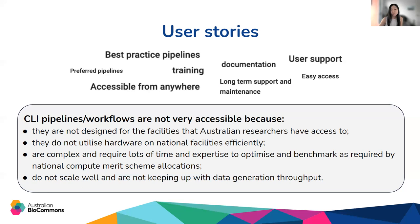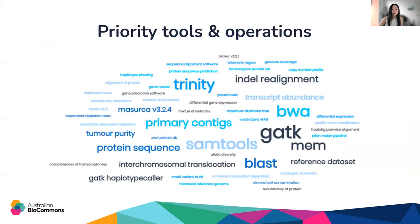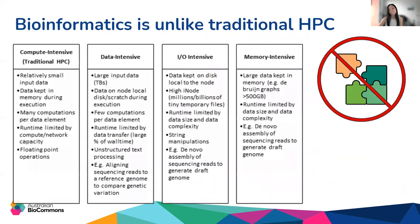We also found that many best practice tools don't natively scale well. The tools, if run out of the box, didn't utilise HPC hardware efficiently. And because bioinformatics workflows are so complex, consisting of many different tools, it takes quite a lot of time and expertise to benchmark and optimise the tools as required by national and partner merit scheme allocations. The most common workflows and prioritised themes included genome and transcriptome assembly, mapping and variant calling, and commonly used tools such as Trinity, BWA, GATK, BLAST, and SAMtools.